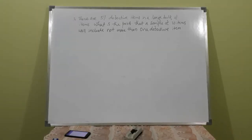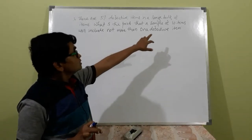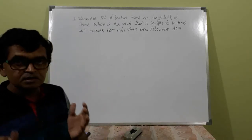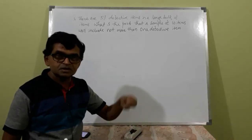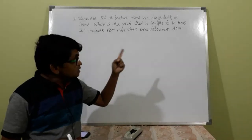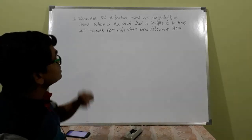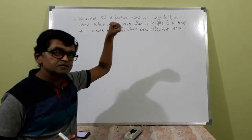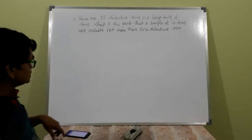Example: There are 5 percent defective items in a large bulk. What is the probability that a sample of 10 items will include not more than one defective item? This is a binomial experiment because each item can be categorized as defective or non-defective, the selection of 10 items is independent, n = 10 is finite, and the probability of selecting a defective item is always 5 percent.